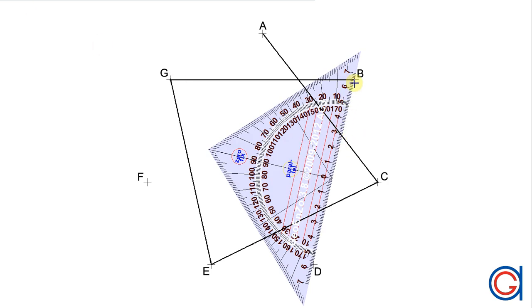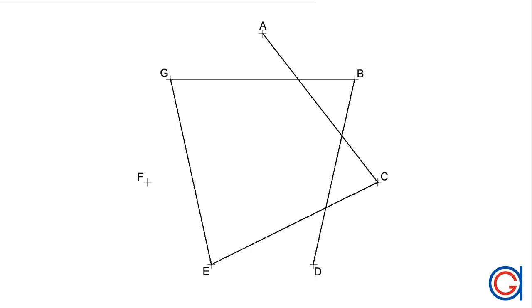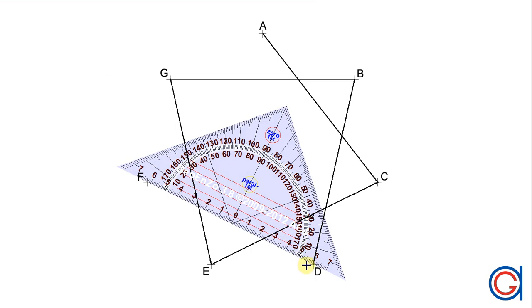Next we join vertex B to vertex D, skipping vertex C. Now vertex D to vertex F, skipping vertex E.